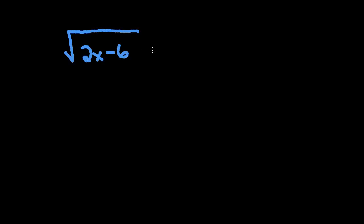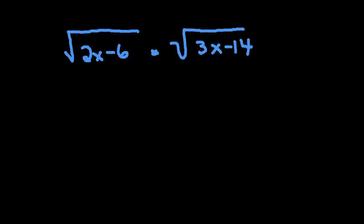So let's do another one that's a little bit more complicated. Let's look at the square root of 2x minus 6 equals the square root of 3x minus 14. So in this case, I've got x on both sides of the equation, and the x is still underneath the square root. So I know I'm going to have to square in order to get the x out from underneath the square root.